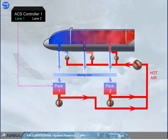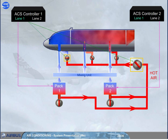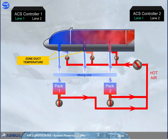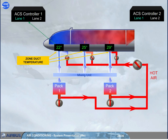ACS controller one controls the cockpit trim air valve and the hot air valve. ACS controller two controls the forward and aft cabin trim air valves. The related zone duct temperature — which is the temperature of the air entering a zone — is also monitored by the ACS controller: cockpit duct temperature by ACS controller one, and forward and aft duct temperatures by ACS controller two.